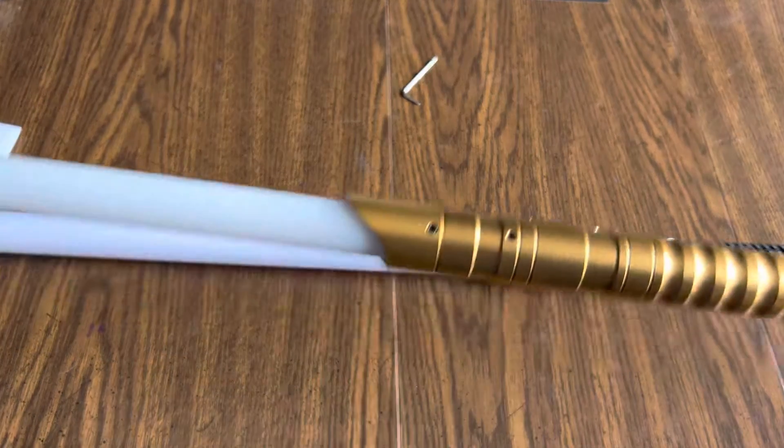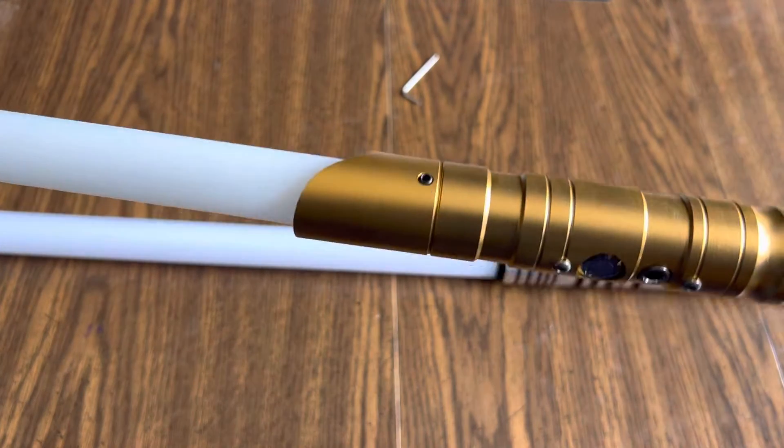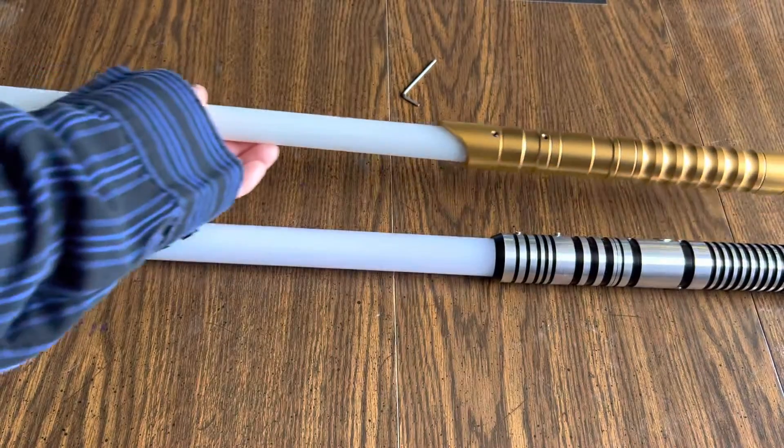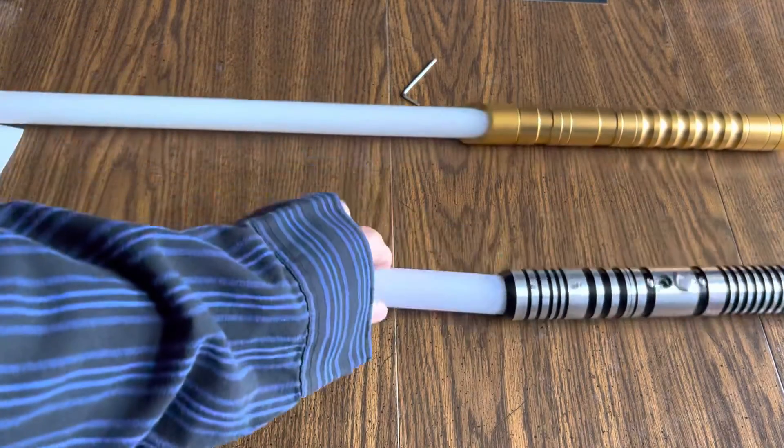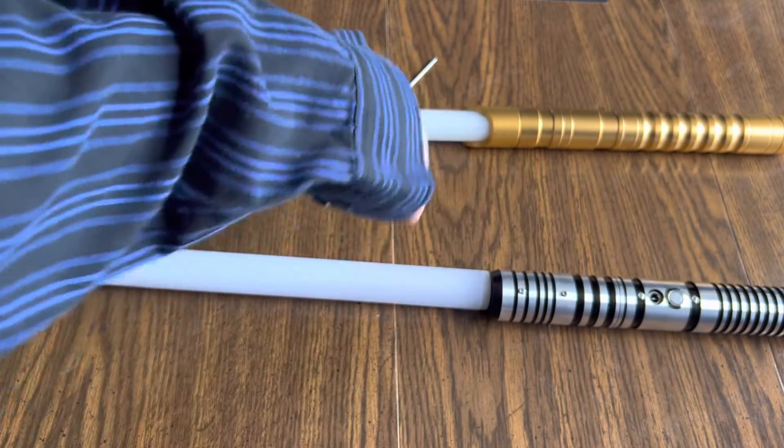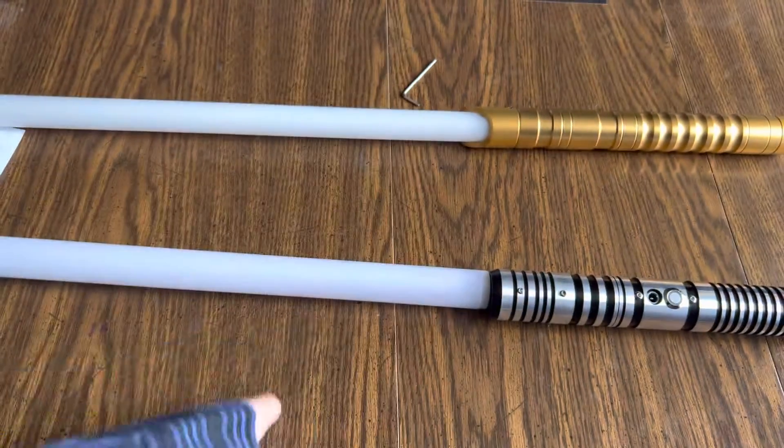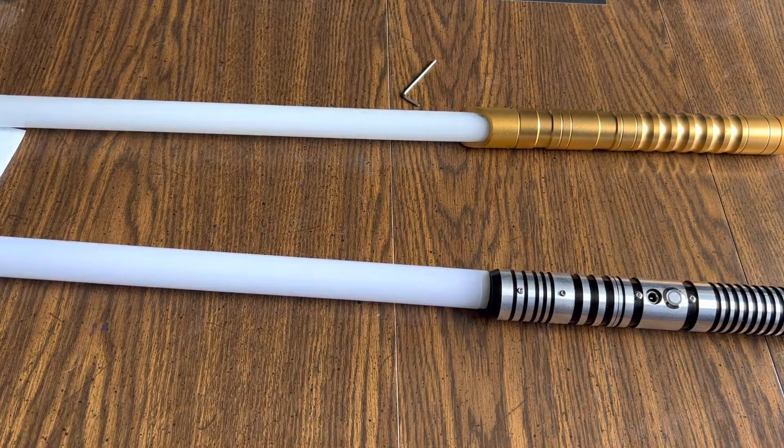Now, it only has two screws, retaining screws. But it holds them pretty firmly. Now, I loosened this up to demonstrate my next point. This one has two screws as well, but they're not on opposite ends of the blade. So there is a little wobble, actually, in my NeoPixel saber.